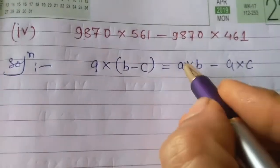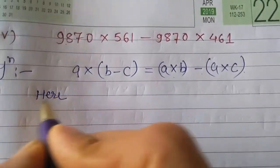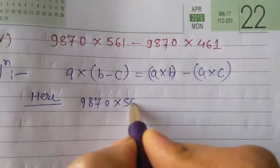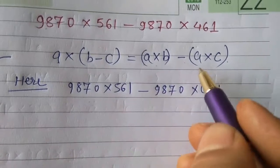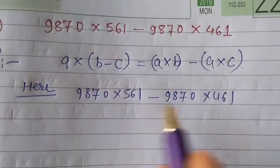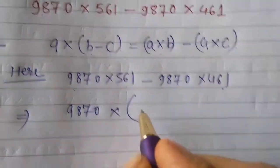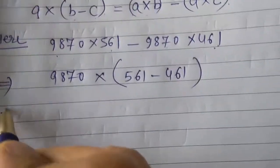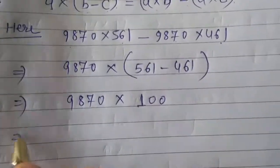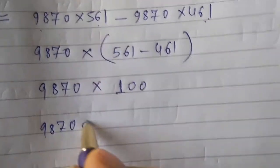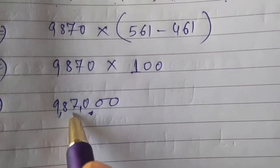The question 9,870 × 561 − 9,870 × 461 is in the form A × B − A × C. By the Distributive Law of Subtraction, this equals A × (B − C), where A = 9,870, B = 561, and C = 461. So we get 9,870 × (561 − 461) = 9,870 × 100 = 987,000.